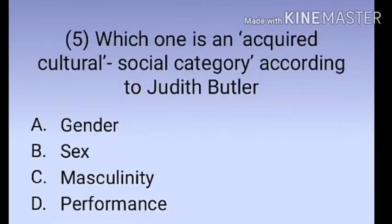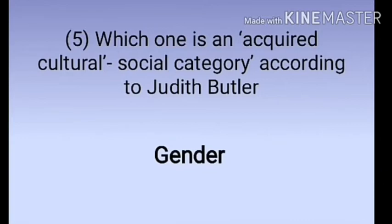Question number five: Which one is an accurate cultural social category according to Judith Butler? Options: gender, sex, masculinity, performance. The answer is gender. Gender is a cultural and social category, whereas sex is a natural acquisition — it is not deliberately performed. This reinforces why Butler sticks with the performance theory, identifying gender as the culturally occurring category.